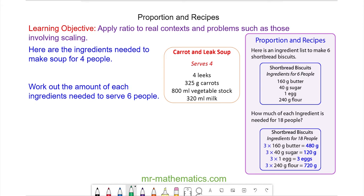Again, I'm going to write the ingredients as a ratio. We have leeks, carrots, vegetable stock, and milk: 4 leeks, 325 grams of carrots, 800 milliliters of vegetable stock, and 320 milliliters of milk. This serves four people.